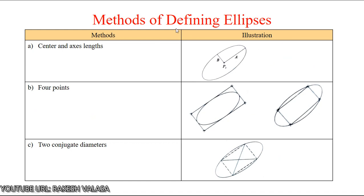Another method is defining ellipses. The first method uses center and axis length. For constructing an ellipse, we require one center point and axis lengths — that is, major axis length and minor axis length. Using these two parameters, we can construct ellipses in any software. Another method uses corner points: by using four corner points, we can construct an inscribed ellipse or a circumscribed ellipse. The last method uses two conjugate diameters to construct an ellipse.